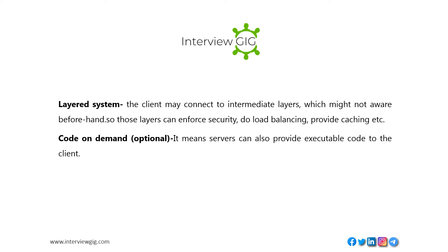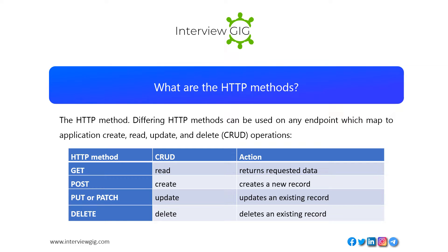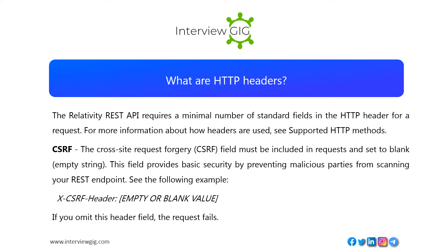What are the HTTP methods? Different HTTP methods can be used on any endpoint which map to application Create, Read, Update, and Delete (CRUD) operations. GET maps to Read and returns requested data. POST maps to Create and creates a new record. PUT or PATCH maps to Update and updates an existing record. DELETE maps to Delete and deletes an existing record.